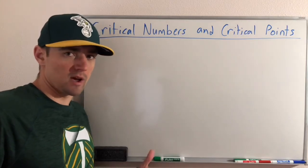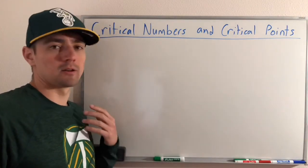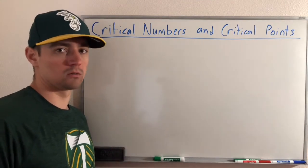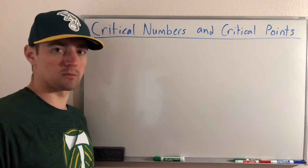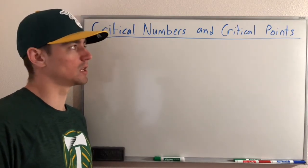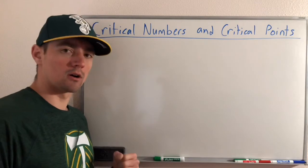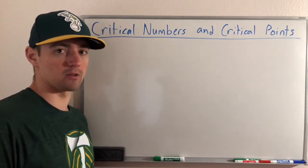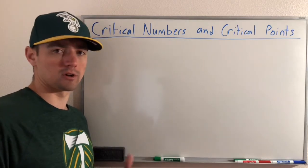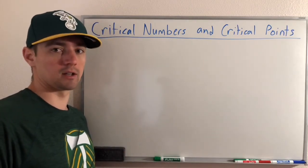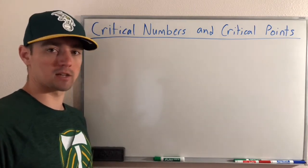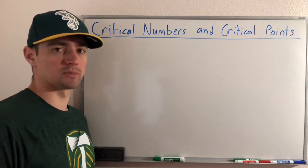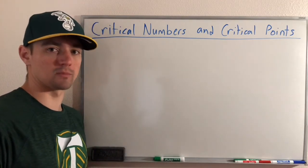Hey guys, Jake here, coming at you with another math lesson today. Today I'm going to be talking about critical numbers and critical points, which will continue to build on the whole local versus global maximum and minimum values that we've been talking about throughout this week. Critical numbers are the way that you actually find your maximum and minimum values, whether local or global, and they play a big role in finding where those local maximum values occur. Critical points come into play when you're trying to find those maximum and minimum values.